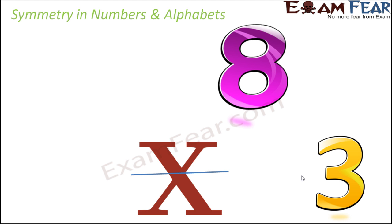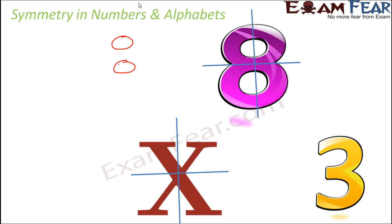Let's start with X. A horizontal line divides X into two exactly equal halves, so it has a horizontal line of symmetry. A vertical line also divides it into two equal halves, so X has both a horizontal and a vertical line of symmetry. Moving on to 8 — a horizontal line again divides it into two equal halves, and a vertical line also divides it into two equal halves. Therefore, 8 also has one horizontal and one vertical line of symmetry.